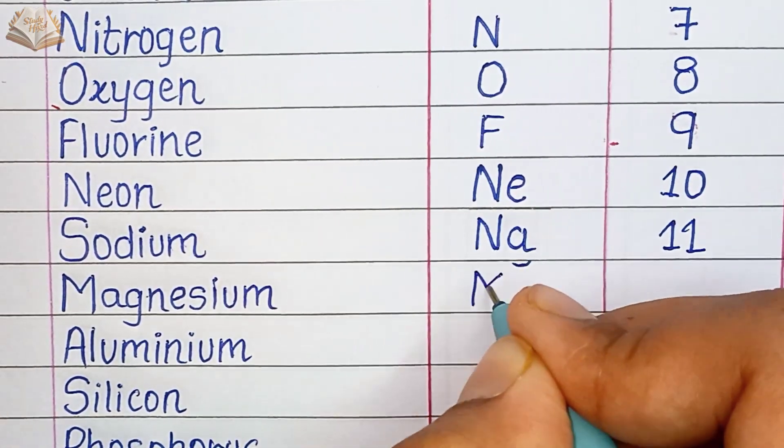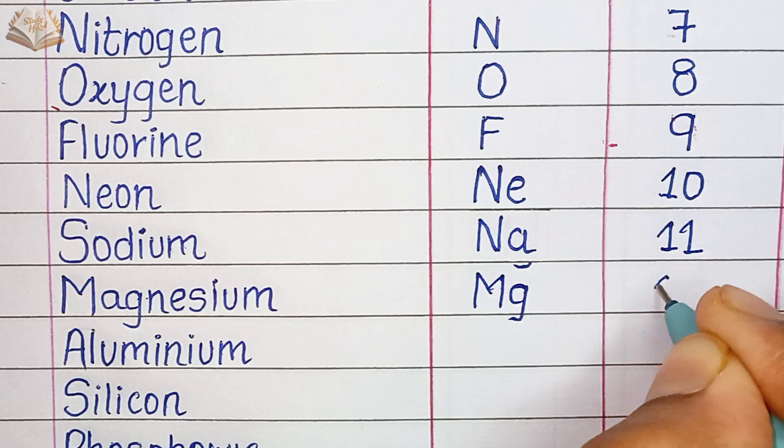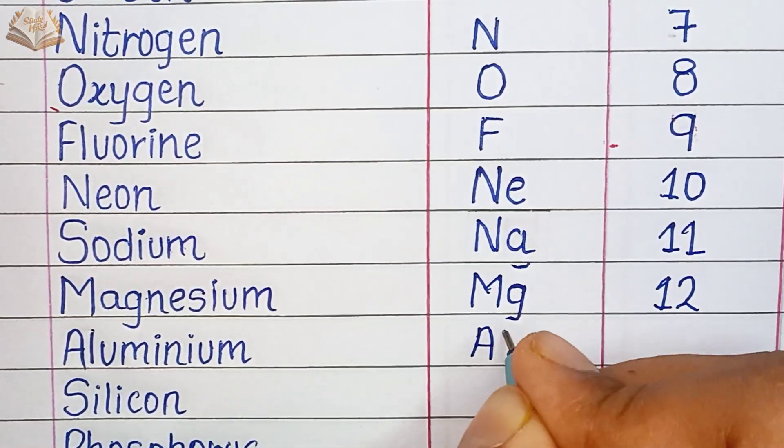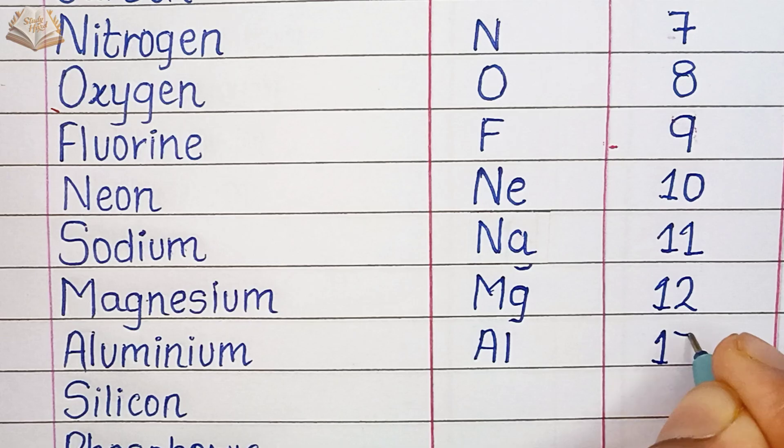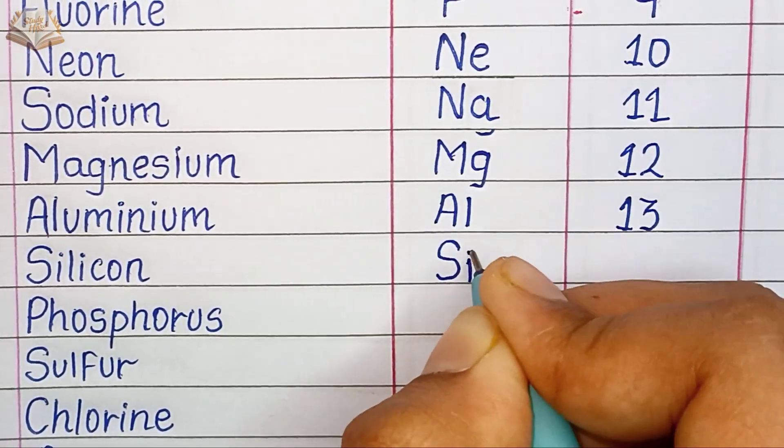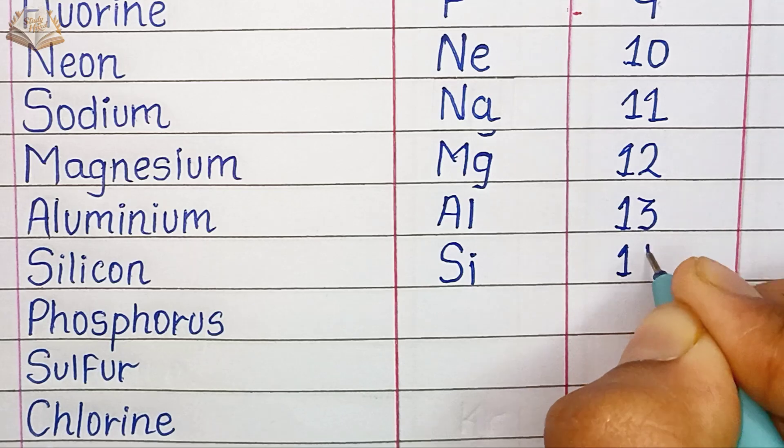Magnesium, MG, atomic number 12. Aluminium, AL, atomic number 13. Silicon, Si, atomic number 14.